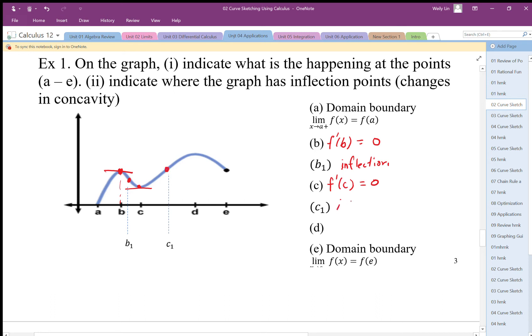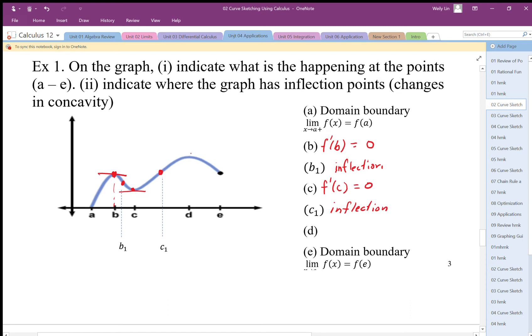Point d represents again a max, so f prime at d must be equal to zero. Then the last part here is kind of cut off, but as x goes to e from the negative side...